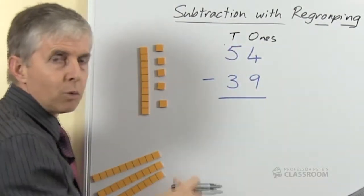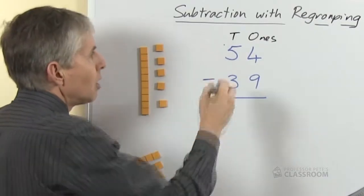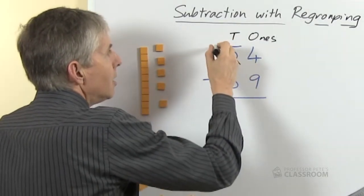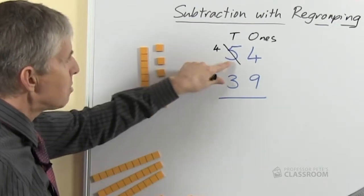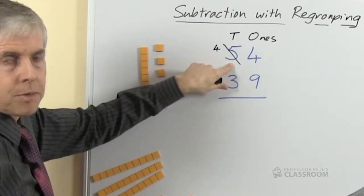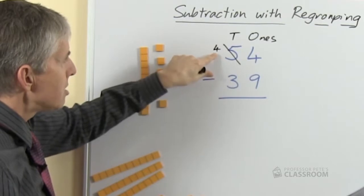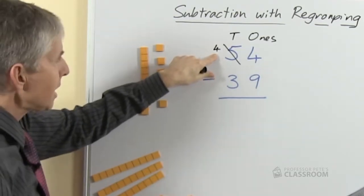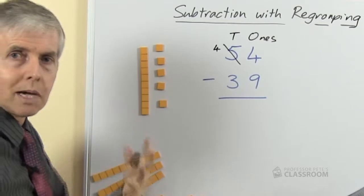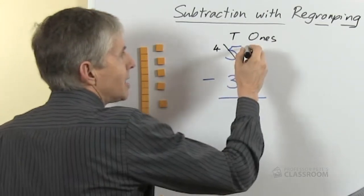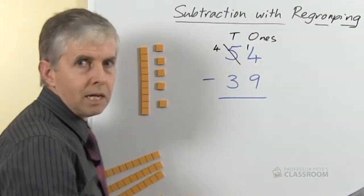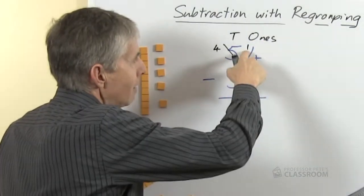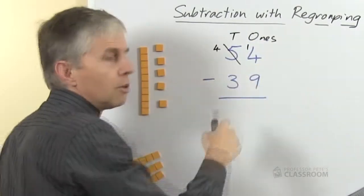We regroup from the 10, remember we took a 10 and broke it up into ones so we'll cross out the 10s because now we only have 4 tens left. So this number here will always be 1 less than that number, we take 1 of the 10s and break it up. And what do we do with that 10? You'll remember we made it up into 10 ones. That 10 ones gets added to the 4 ones to make 14. So we write a little 1 there and now you can see it says 14.